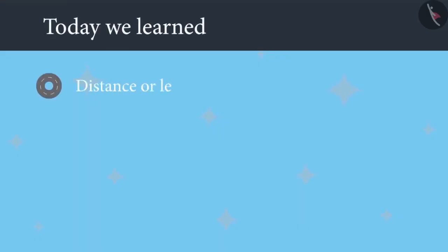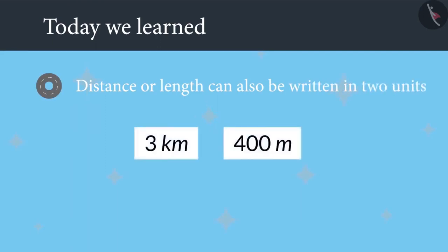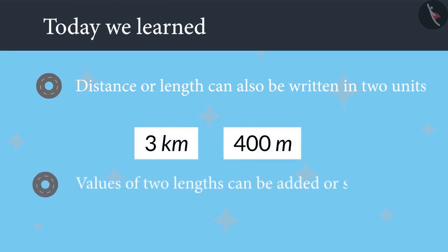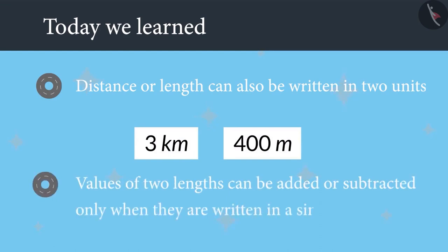Well done, Ayushman. Today you learned that distance or length can also be written in two units — for example, 3 kilometers 400 meters. Values of two lengths can be added or subtracted only when they are written in a single unit.